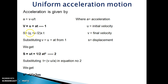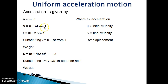We know that displacement is given by the average velocity formula: s = ((u + v) / 2) × t. If we substitute v = u + at from equation number 1 into this equation, we get s = ut + ½at², which gives us the second equation for uniform acceleration motion.